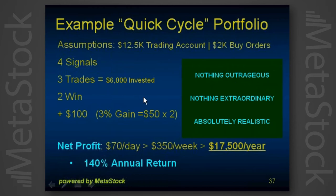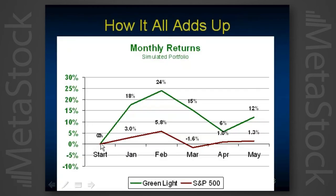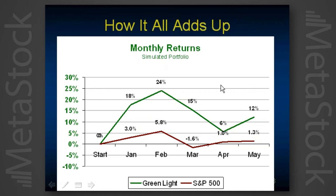We're not into leprechaun trading — nothing outrageous, nothing extraordinary. It's all about being absolutely hard-nosed and realistic. Here's our sample portfolio based on that account starting in January of this year, just to show you how it's performed compared to the S&P. You can see multiples against the S&P: 18% versus 3% in January, 24% for the strategy versus 5.8% in February. Even in April where they were closer, it was six times what the S&P 500 did. Because we're rolling through the capital basically twice a week, it really adds up. A $12,500 investment becomes $21,800 by the end of May — that's a ROI year-to-date of 74%, on track for 100-plus for the year.